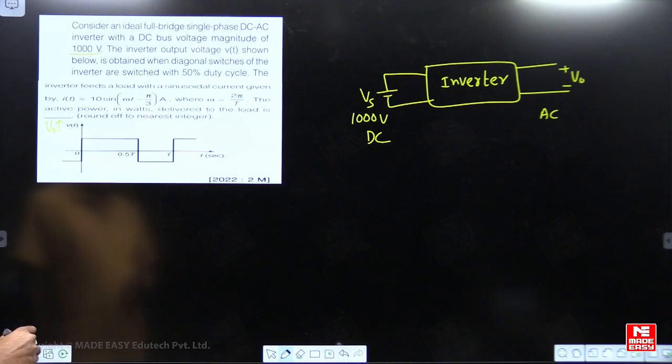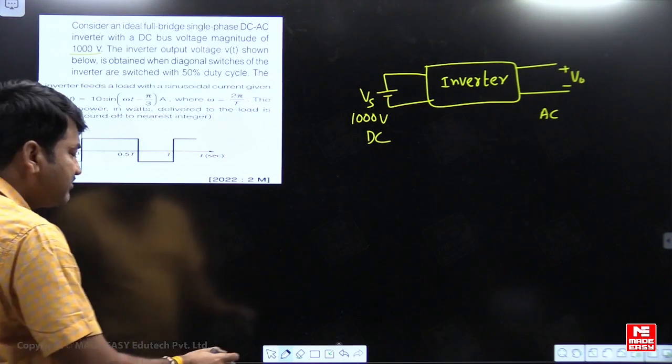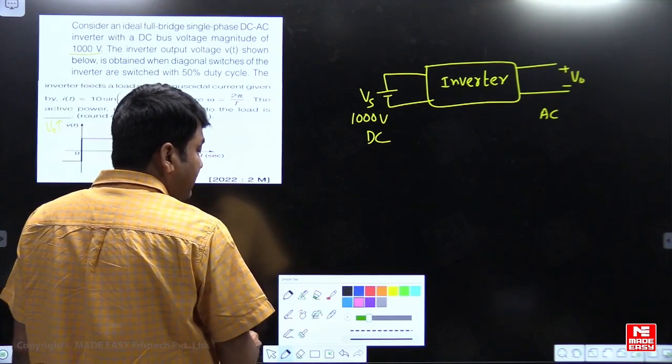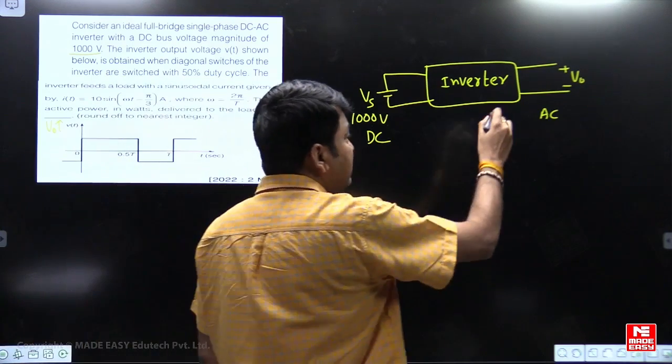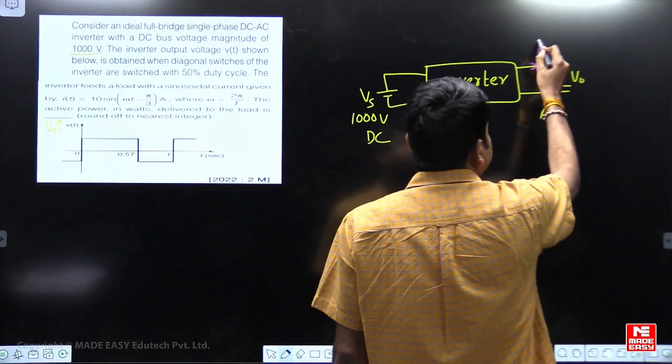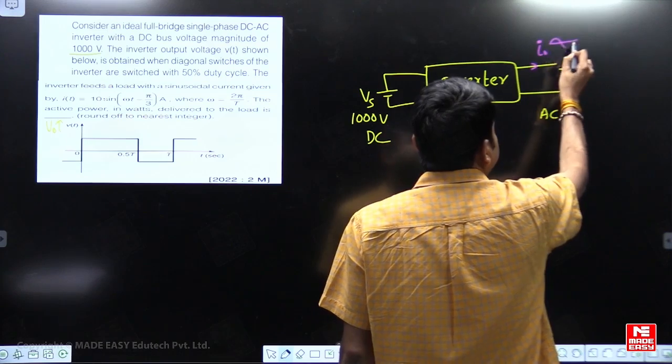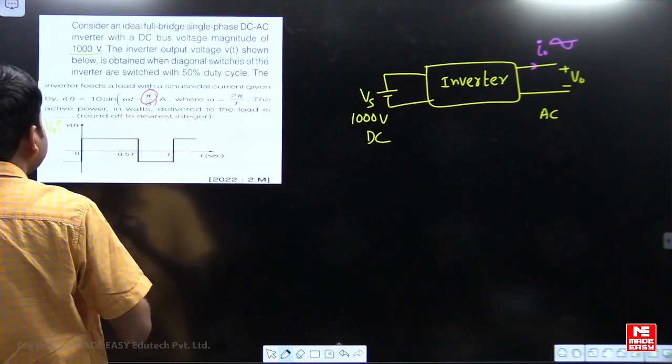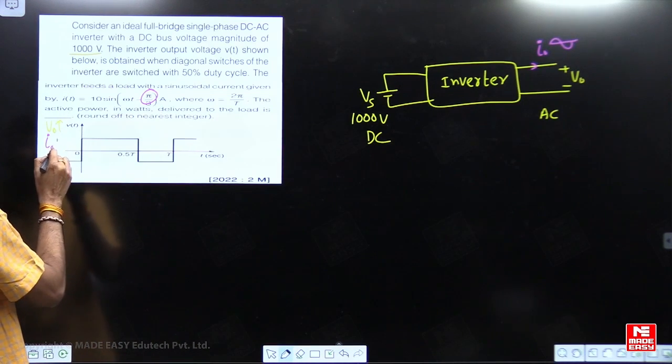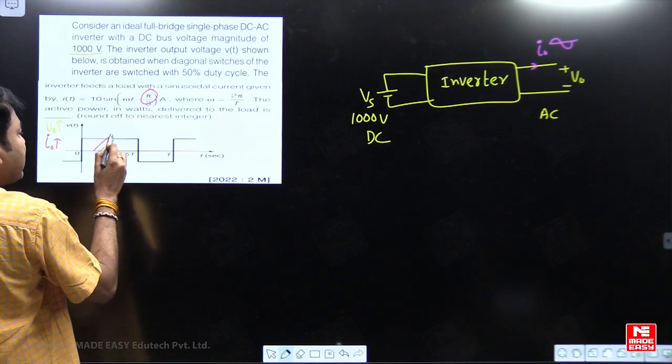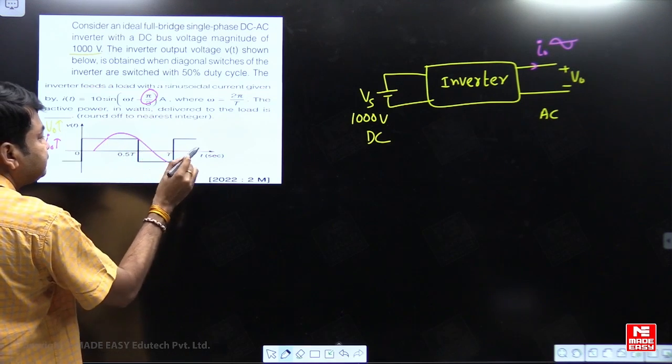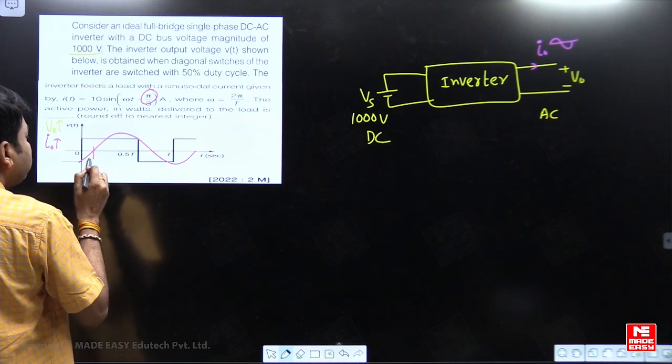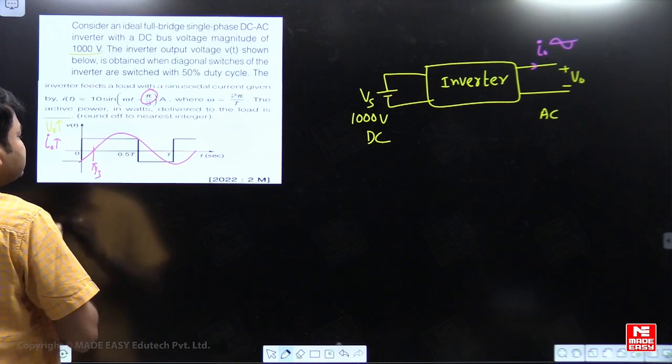Then, the inverter is feeding a load with sinusoidal current. That means the current waveform is sinusoidal here. See, the current waveform is sinusoidal. This current waveform is sinusoidal. And that is lagging by pi by 3 with respect to this. Let me show you the current waveform here. Sinusoidal lagging by pi by 3. This is the current waveform lagging by pi by 3.